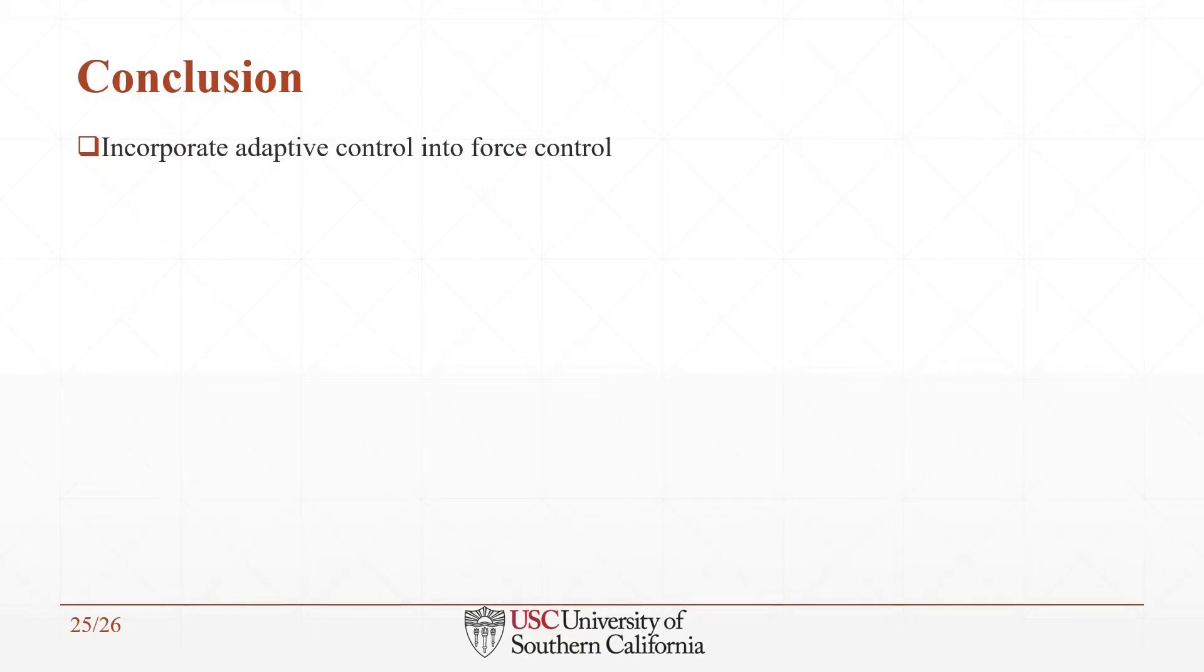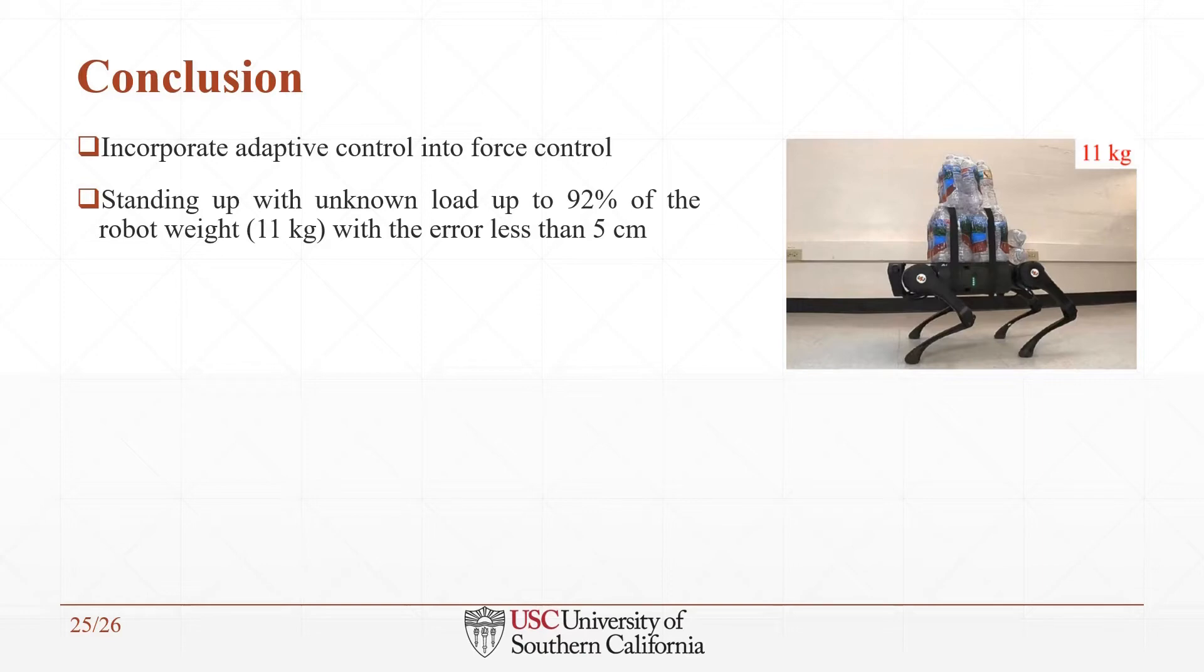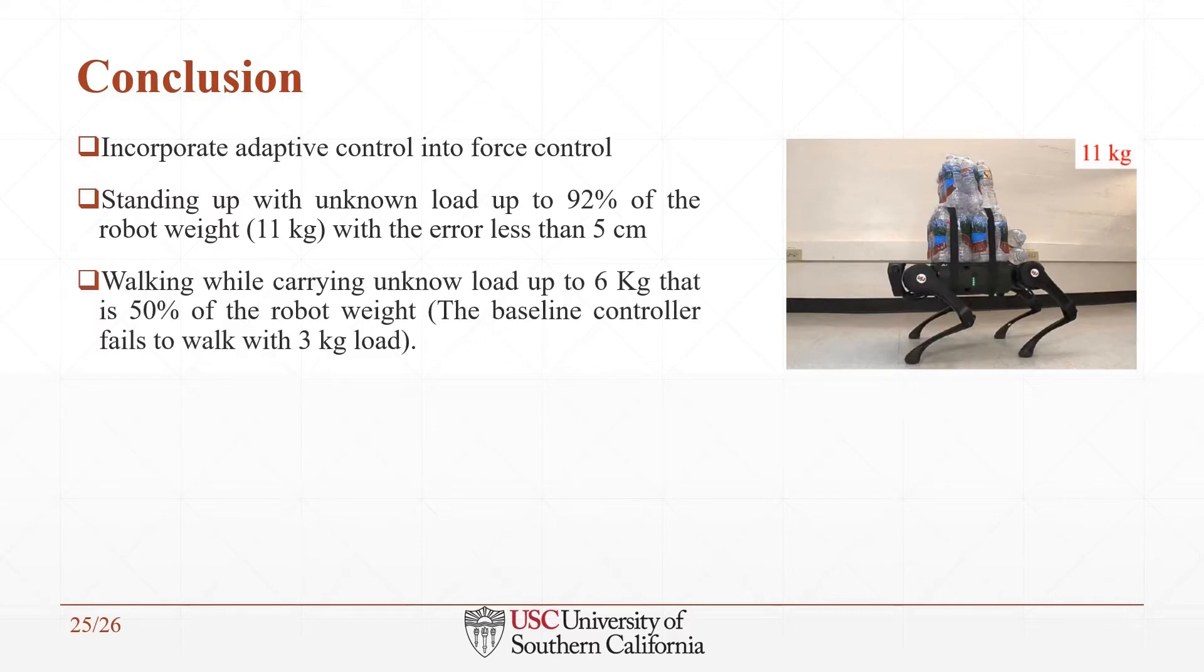In conclusion, we have presented a solution to compensate for the uncertainty of quadruped robots during walking or standing. In this project, we incorporate adaptive control into force-based controllers. The robot can easily stand up with an unknown load up to 92% of its weight with an error of less than 5 cm. In addition, it can walk while carrying an unknown heavy load up to 50% of the robot's weight in every direction.